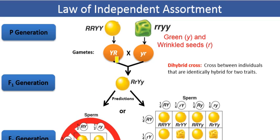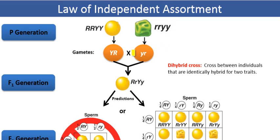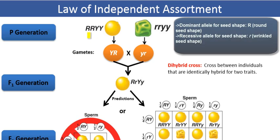In this case, the color character is represented by a capital Y for the allele for yellow color, which is the dominant allele. There are two capital Ys in that parental genotype. Similarly, a small y represents green color, which is the recessive allele. Likewise, the seed-shape character is represented by a capital R, which represents the round seed shape — the dominant allele.